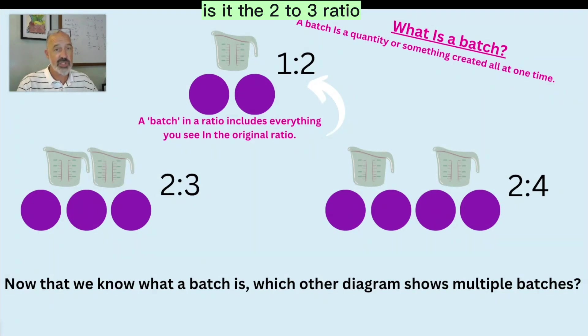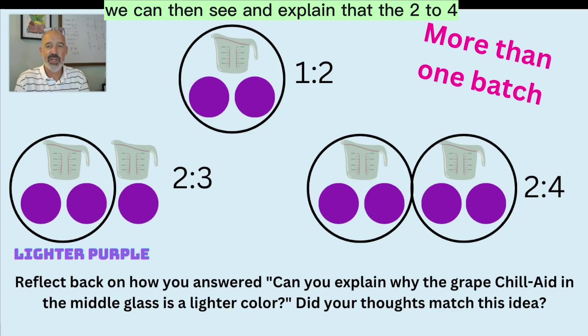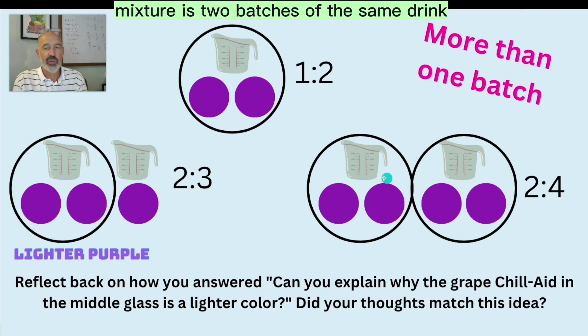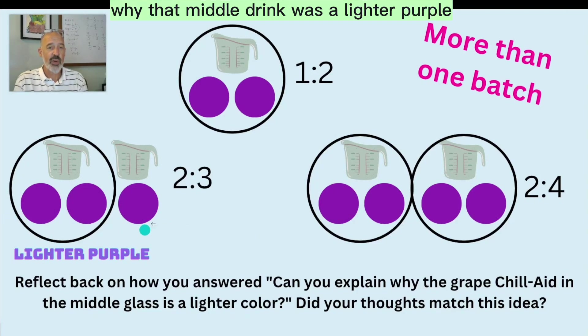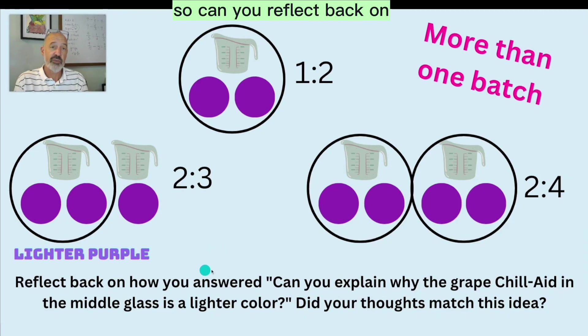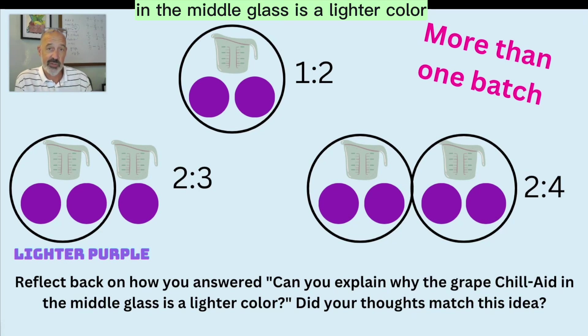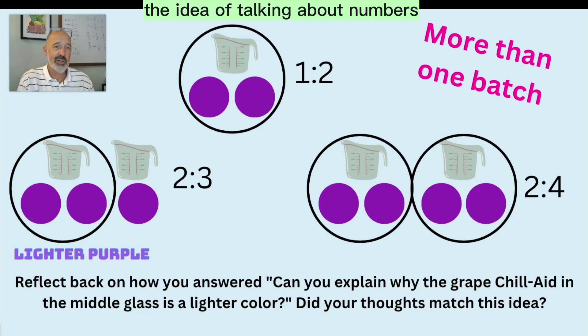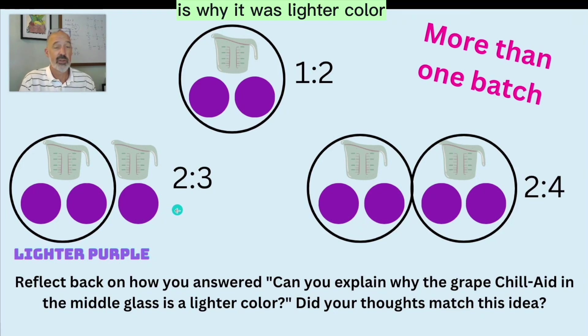Once we create a diagram that shows that one to two is one batch, we can then see and explain that the two to four mixture is two batches of the same drink. So that's why it was the same color. And also that explains why that middle drink was a lighter purple. So can you reflect back on when I first asked you the question, can you explain why the grape Chil-Aid in the middle glass is a lighter color? And did your thoughts match the idea of talking about numbers? The fact that this is one less spoonful of powder is why it was lighter color and also why it's going to taste not quite as sugary or grapey.